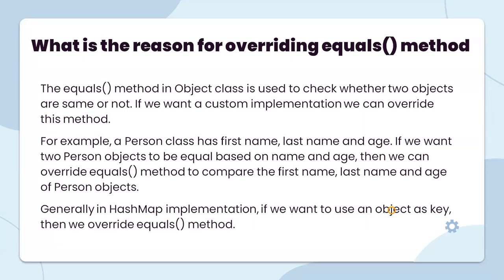For example, a Person class has a first name, last name, and age. If we want two Person objects to be equal based on name and age, then we can override the equals method to compare the first name, last name, and age of a Person object. Generally, in a HashMap implementation, if we want to use an object as a key, then we override the equals method.